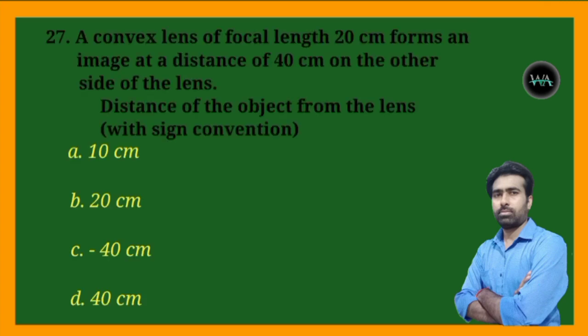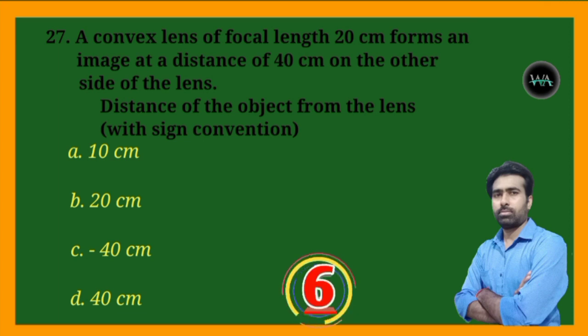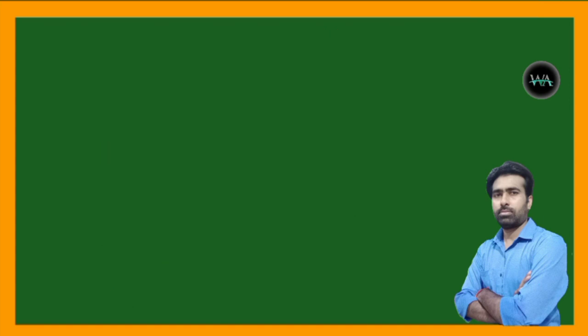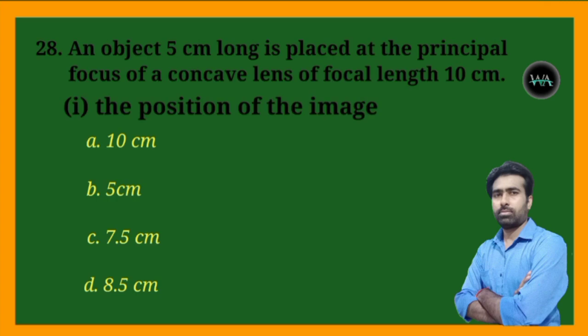Next question: a convex lens of focal length 20 cm forms an image at a distance of 40 cm on the other side of the lens. Find the distance of the object from the lens with sign convention.